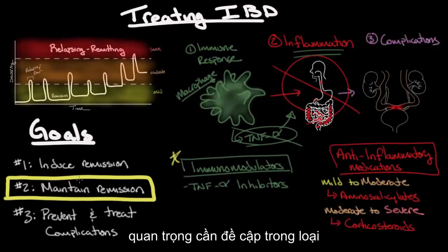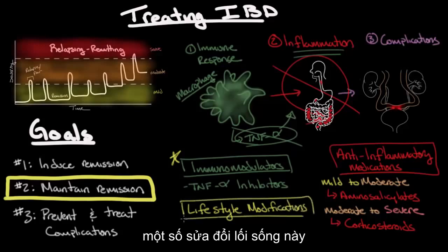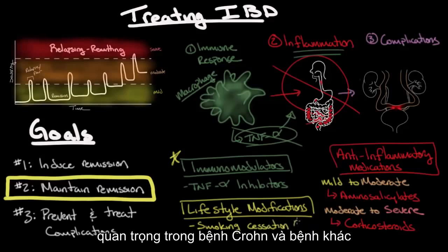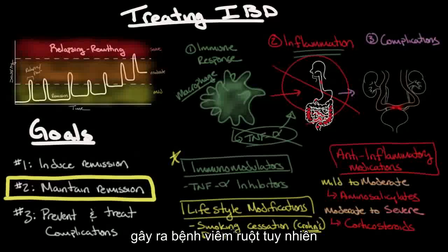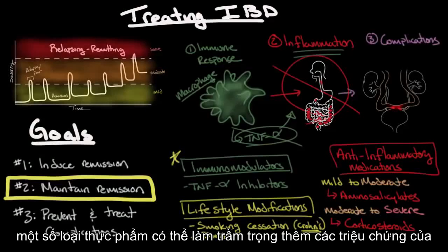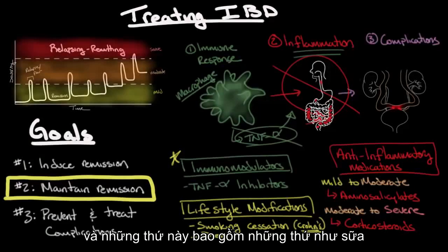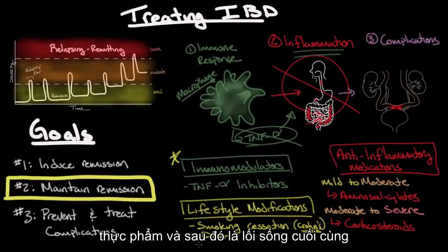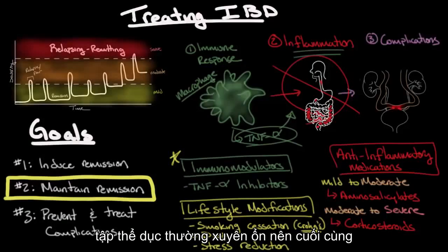Another important treatment category during the remission phase is lifestyle modifications. Although the effect can be modest, they have been shown to decrease the rate of relapse. One modification is smoking cessation, especially important in Crohn's disease. Another is diet — while there's no evidence that certain diets cause IBD, some foods may aggravate symptoms and should be limited, including dairy, high-fat foods, and high-fiber foods. The last lifestyle modification is stress reduction, achieved through meditation or routine exercise.